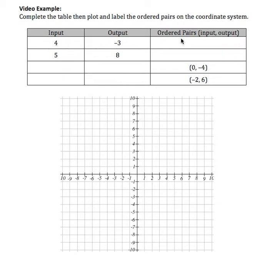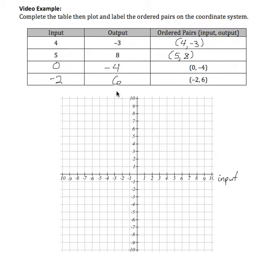Input 4, output negative 3 — that means I'm going to write that as (4, -3). Input 5, output 8 — written as (5, 8). If I'm given the ordered pair (0, -4), then 0 is input and negative 4 is output. Same thing with (-2, 6): negative 2 is input and 6 is output. Usually when we use the language of input and output, we have a relationship defined between those two quantities, but not always. Sometimes we just use that language to represent the first coordinate as input and the second coordinate as output.